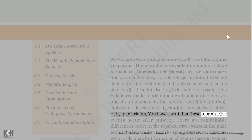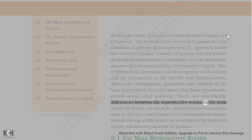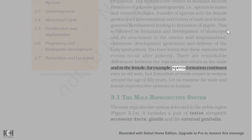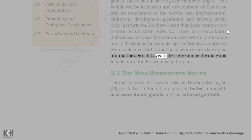These reproductive events occur after puberty. There are remarkable differences between the reproductive events in the male and in the female. For example, sperm formation continues even in old men, but formation of ovum ceases in women around the age of 50 years. Let us examine the male and female reproductive systems in humans.